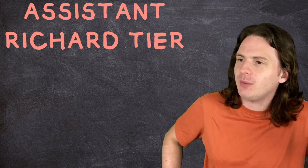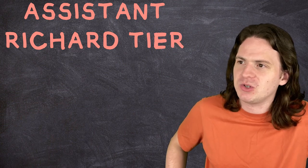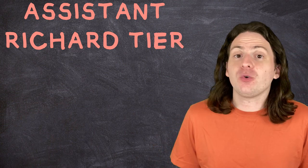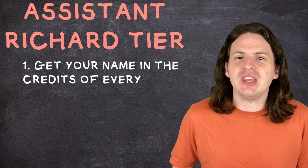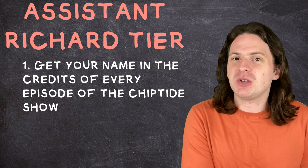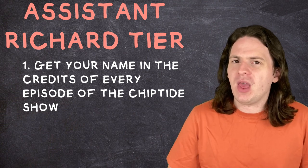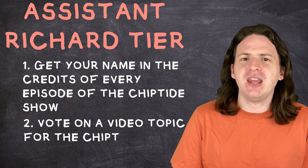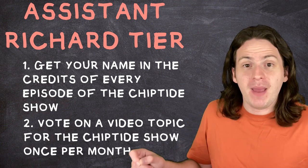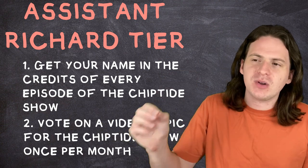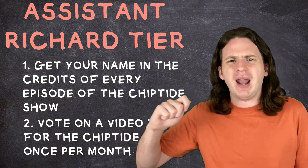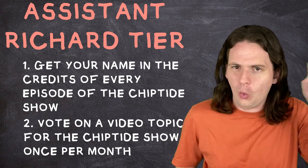So for just $3 a month, you can gain access to the Assistant Richard. Oh, you named all the tiers after yourself when I explicitly told you not to? Okay. Everyone in the Assistant Richard tier will have their name written out in the credits of every single episode of The Chip Tide Show. And once per month, you will get to vote on a video that I will have to make for the channel. So whatever you guys vote on, I guarantee you I will make that video and I will post it to YouTube once per month.